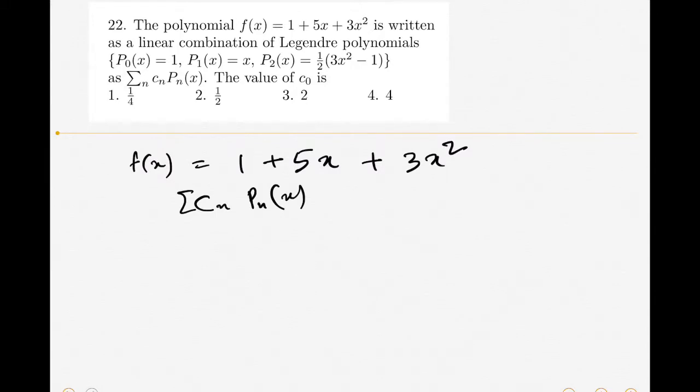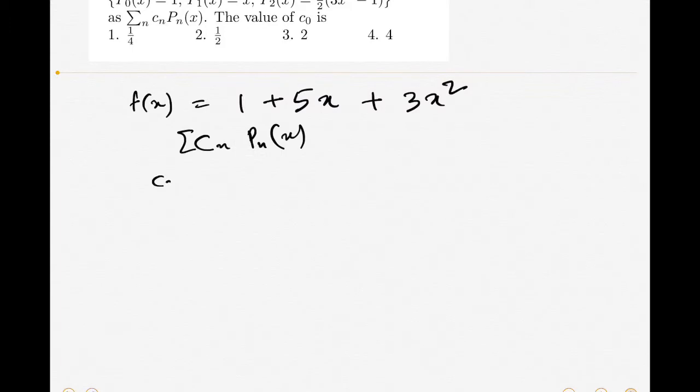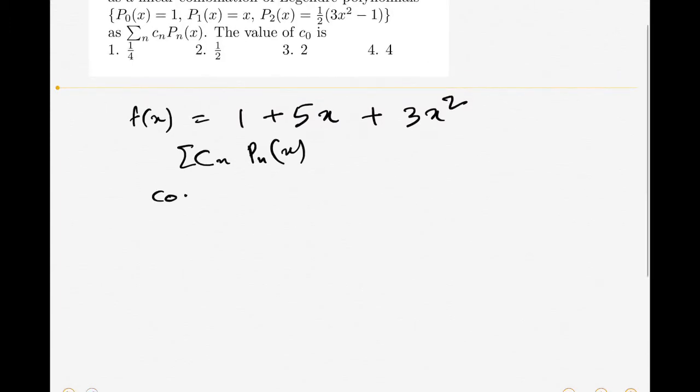But we don't know c₀, c₁, and c₂. So this is c₀·P₀(x) where P₀(x) is given to be 1, plus c₁ times P₁(x) which is x, plus c₂ times P₂ which is ½(3x² - 1), and this should be equal to 1 + 5x + 3x².